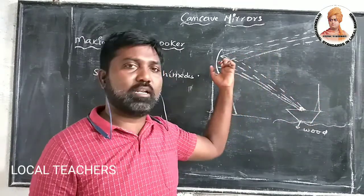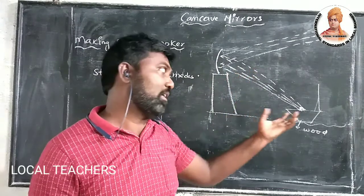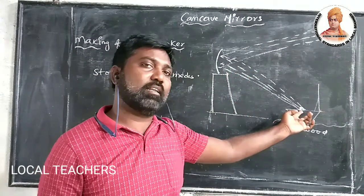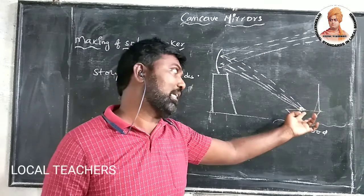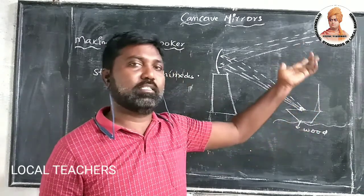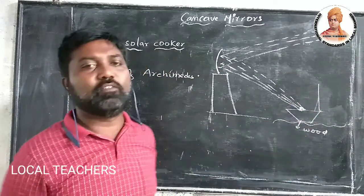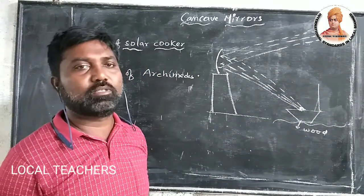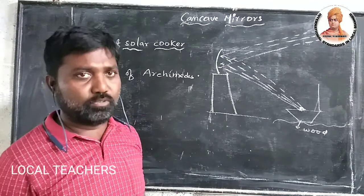The light reflected is more, so the heat intensity — the heat produced at that converged point — is more. Such that after some time, the ship will burn out. This is the phenomenon that Archimedes used.